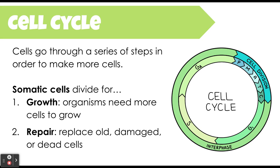The cell cycle is a specific series of steps that your somatic cells go through in order to make more of themselves. We need to make more cells in order to grow — if an organism is growing from a tiny individual all the way up to an adult, you need more cells for that. The other important reason somatic cells divide is to repair damaged or broken cells, or even just old ones. Cells that eventually die need to be replaced, and we go through the cell cycle to replace them.